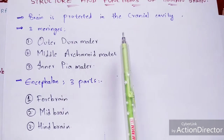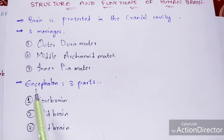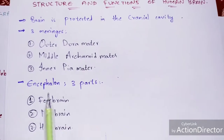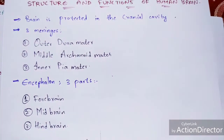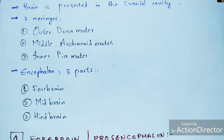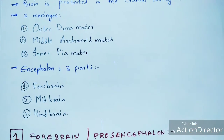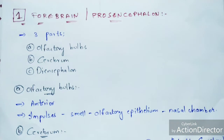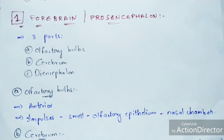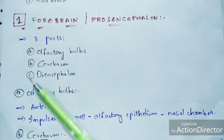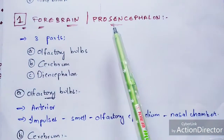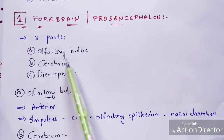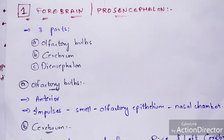The brain is also called the encephalon, and this encephalon consists of three parts: forebrain, midbrain, and hindbrain. The forebrain is also known as the prosencephalon, and it consists of three parts: olfactory bulbs, cerebrum, and diencephalon.